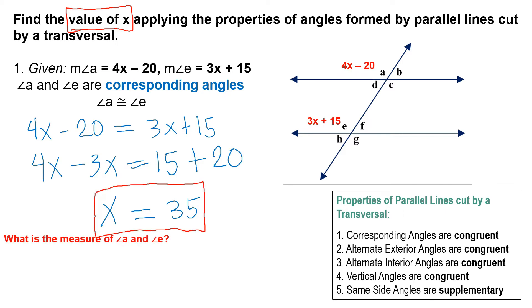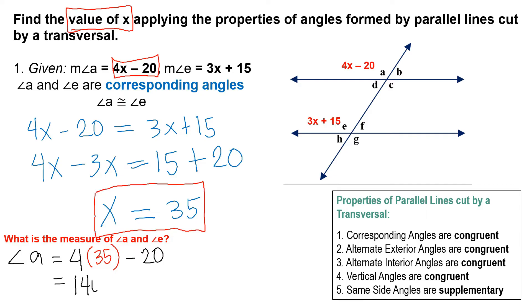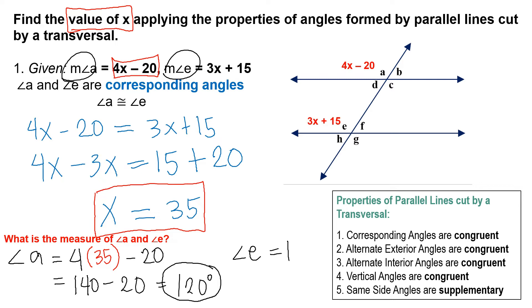Now, to find the measure of angle A and angle E, we substitute x equals 35 into 4x minus 20: 4 times 35 minus 20 equals 140 minus 20 equals 120 degrees. Since angle A and angle E are congruent, the measure of angle E is also 120 degrees.